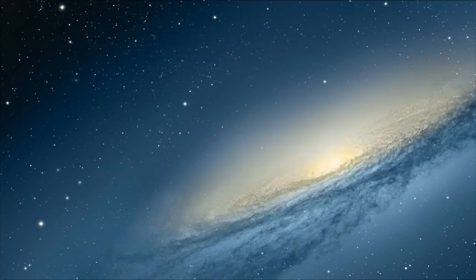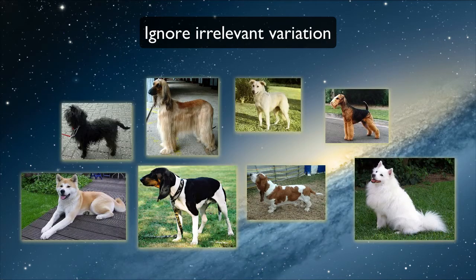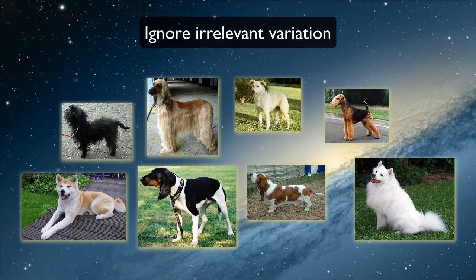A key strategy involves teaching students to ignore irrelevant variation. What do these dog breeds have in common? Despite almost endless variability of many features, even children can recognize that dogs are a coherent perceptual category.